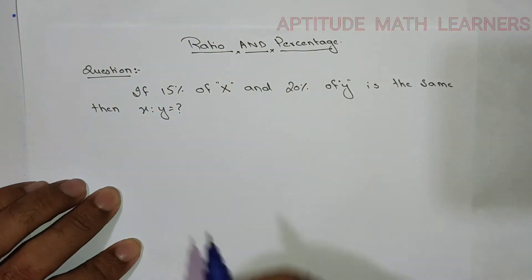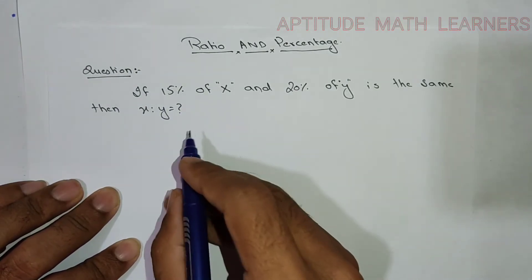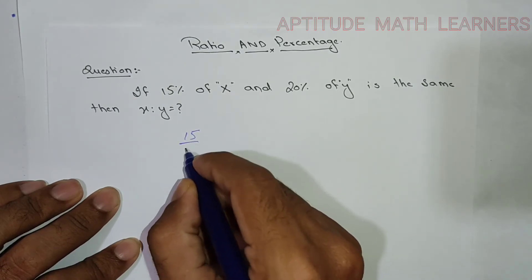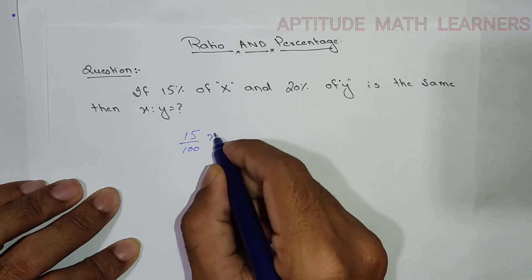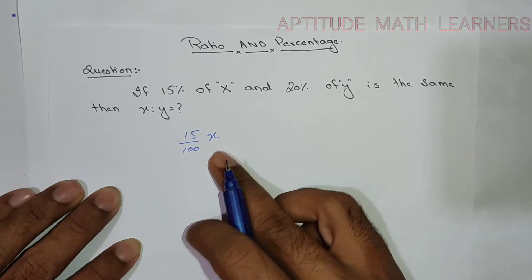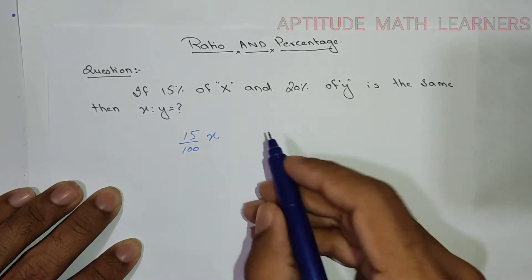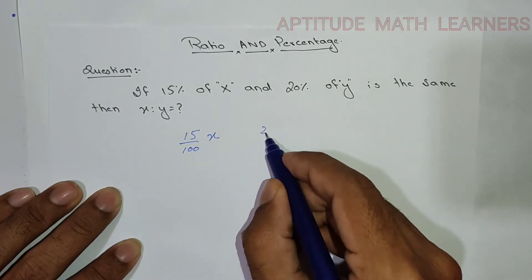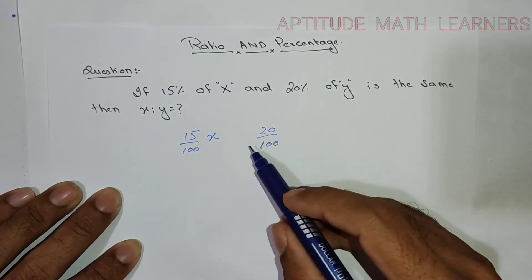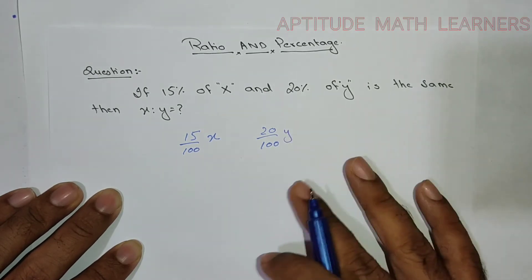First of all, you have to understand that 15% of x means 15 upon 100 of x, which is 15/100 × x. And 20% means 20 upon 100 of y, which is 20/100 × y.